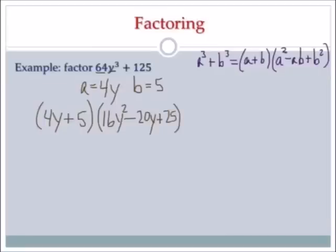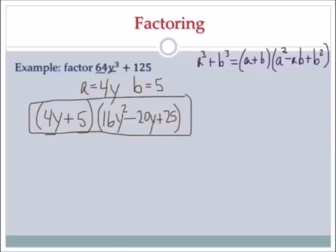If I distribute the 4y and the 5, I will end up with 64y cubed plus 125. So this is my final answer.